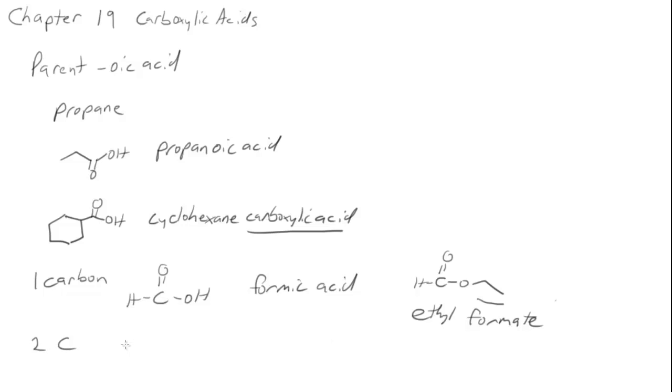If we have two carbons, this is called acetic acid. Most of us are familiar with that one already, otherwise called vinegar. And another very common chemical that we'll see in the lab is ethyl, naming the alcohol side of the ester first, ethyl, then naming the carboxylic acid side, acetate. So ethyl acetate.